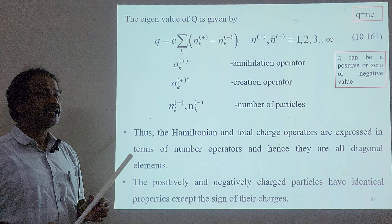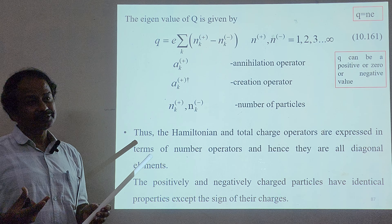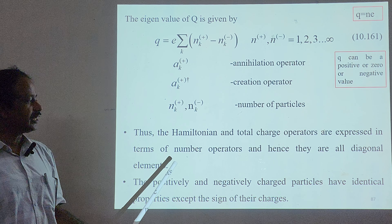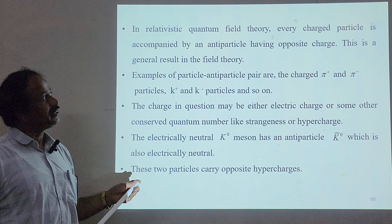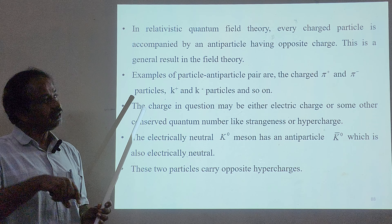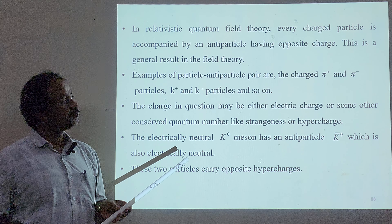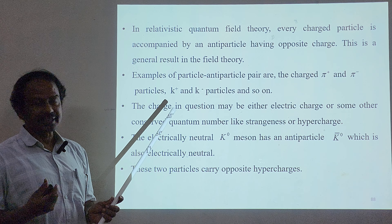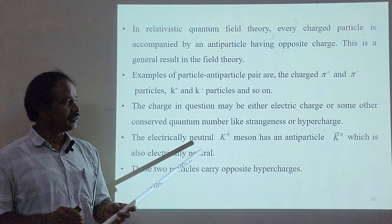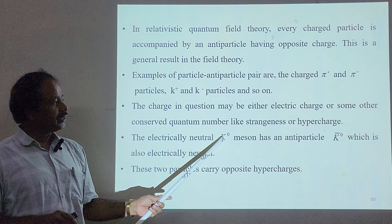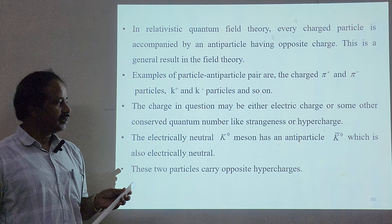The positively and negatively charged particles have identical properties except the sign of their charges. To conclude: in relativistic quantum field theory, every charged particle is accompanied by an antiparticle. Examples of particle-antiparticle pairs are π+ and π−, K+ and K−. The charge in question may be electric charge or some other conserved quantum number like strangeness or hypercharge. The electrically neutral K⁰ meson has an antiparticle K̄⁰ which is also electrically neutral; these two carry opposite hypercharges.